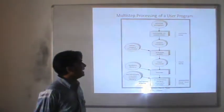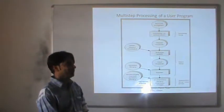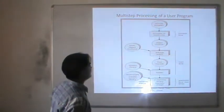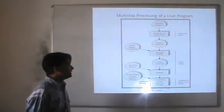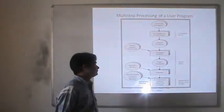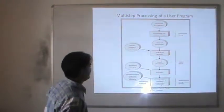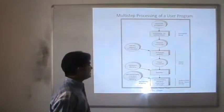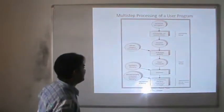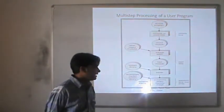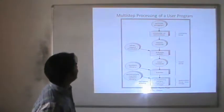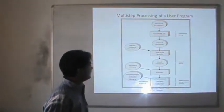When compiling the source program, we may get an intermediate object module. With the help of a linker and loader, we can link this object module to other object modules. Using loading, we can load the program into main memory. Loading is the process of loading any intermediate code into memory as a library. Once the converted code is available in memory, it can be executed by the system — this is known as execution time. This diagram shows multi-step processing of a user program from source program to executable program.